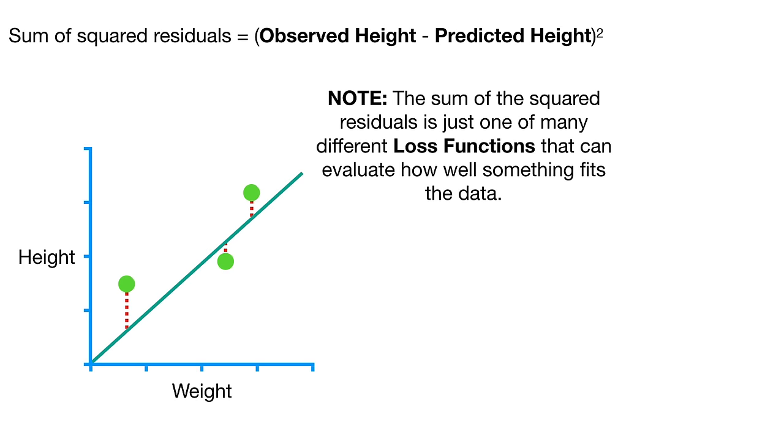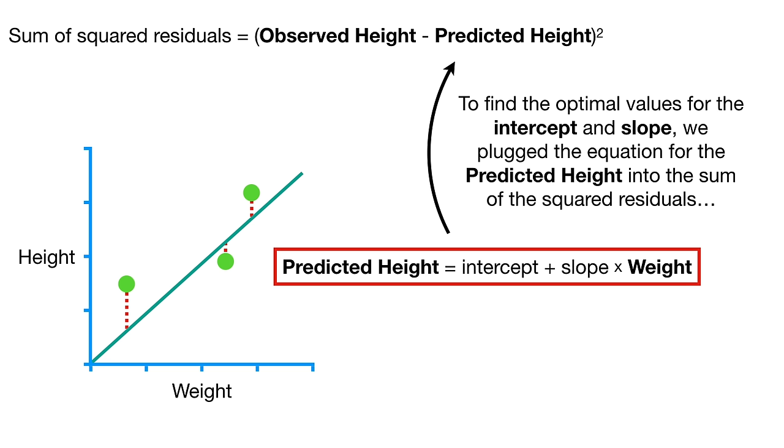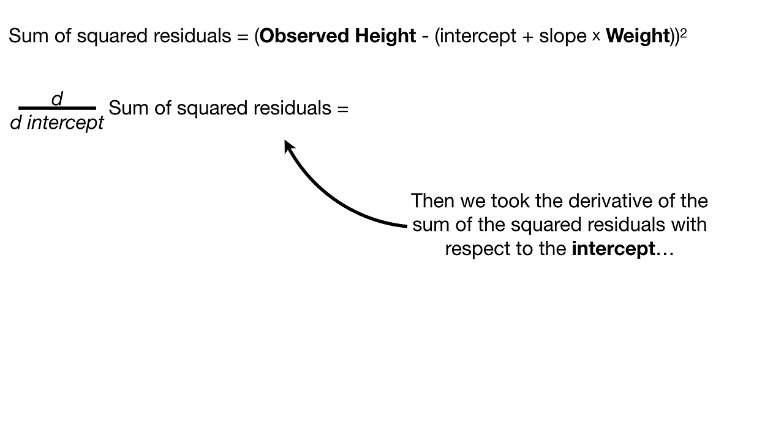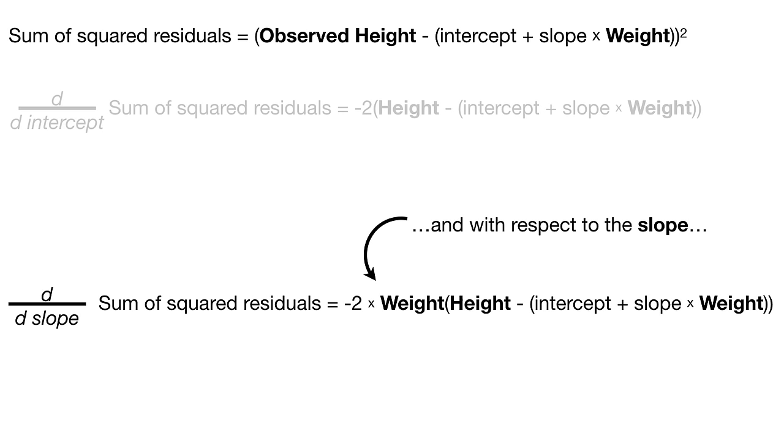However, at first we started out with this generic equation for a line, and the goal was to find the optimal values for the intercept and the slope. For example, if we started with the intercept equals zero and the slope equals one, then we could use weight to predict height. Then we would use the sum of the squared residuals as the loss function to determine how well the initial line fit the data.